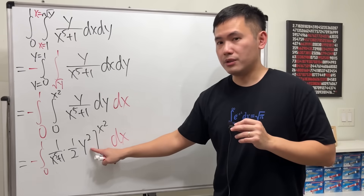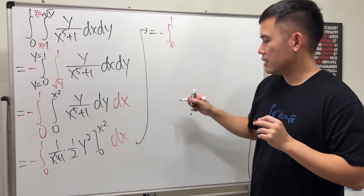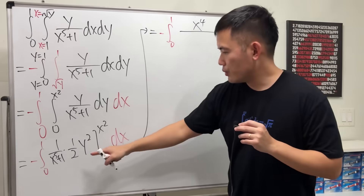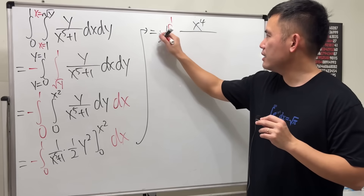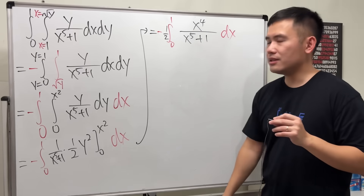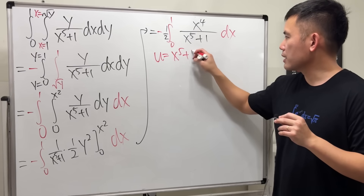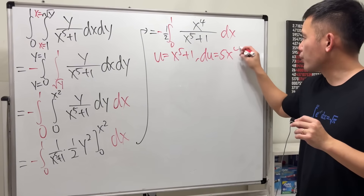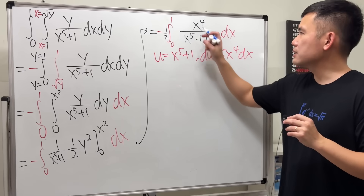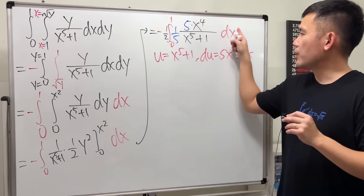When we plug in x squared into 1/2 y squared, that gives us x to the 4th power on top. Putting the one-half in front, we have negative one-half times the integral from 0 to 1 of x to the 4th over (x to the 5th power plus 1) dx. Now we can do a quick u-substitution: let u equal x to the 5th power plus 1, so du equals 5x to the 4th dx. We have x to the 4th but need a factor of 5, so multiply by 5 and divide by 5.